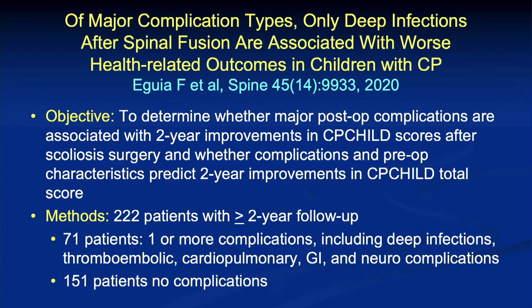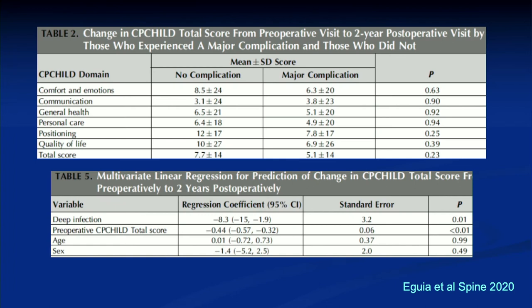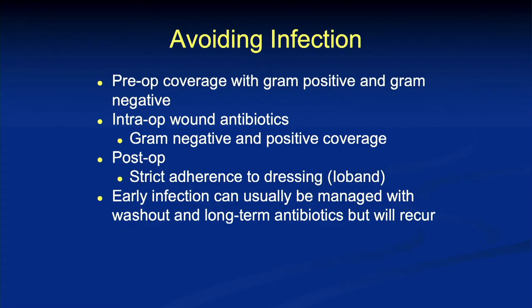Interestingly, if you look at health-related quality of life measures, deep wound infection was the only one that was actually correlated with a worse health-related quality of life outcome. In our 2020 study of 222 patients, 71 had one or more major complications. Looking at the CP Child measure — examining comfort and emotion between patients with no complications versus major complications across different domains — there was no real statistically significant difference overall. But in the multivariate linear analysis, deep infection did end up being a risk factor. So this has an impact beyond just returning to the OR.